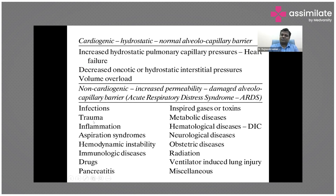Causes of non-cardiogenic pulmonary edema include: infections, trauma, inflammation, aspiration syndromes, hemodynamic instability in patients with sepsis or shock, immunological diseases causing immune-mediated damage, and multiple drugs that damage this barrier. Pancreatitis patients can have pulmonary edema. Toxic gases or toxins, metabolic diseases, hematological diseases like DIC, neurological diseases — there is an entity called neurogenic pulmonary edema — obstetric causes, radiation, and ventilator-induced lung injury.